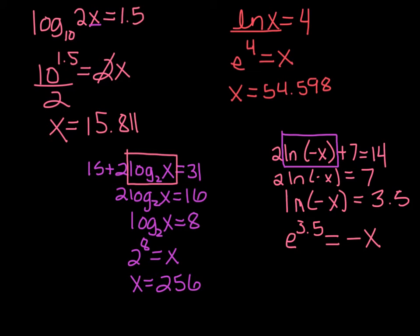So, take e to the 3.5 power and negate it, and then we get negative 33.115. So if you plug in a negative to negative x, it becomes positive and it's fine, it works.